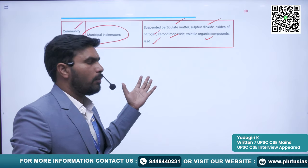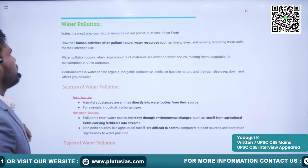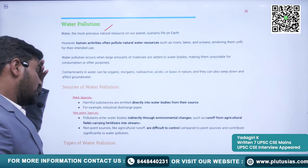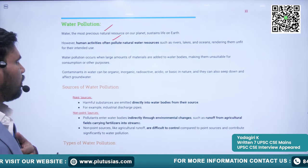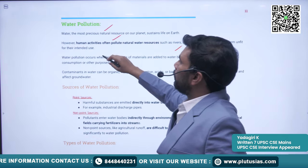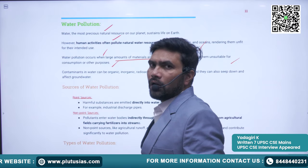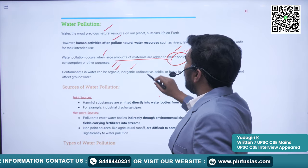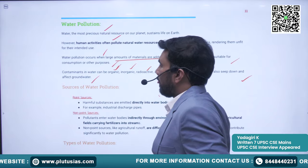Water is the most precious natural resource on our planet and important for sustaining life on earth. However, human activities are polluting natural water bodies such as rivers, lakes, and oceans, rendering them unfit for human consumption. Water pollution occurs when large amounts of materials are added to water bodies making them unsuitable for consumption or other purposes. Contaminants can be organic, inorganic, radioactive, acidic, or basic, and can also seep down to affect groundwater.